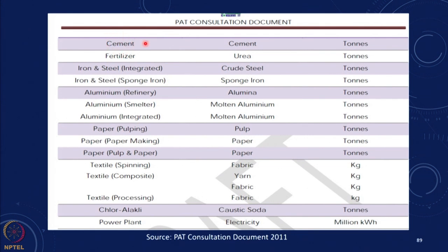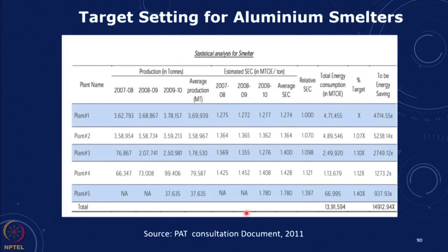In the case of cement, the output was put in terms of tons of cement; fertilizer was developed in terms of tons of urea. So the energy used per ton of urea, energy used per ton of cement, energy used per ton of crude steel, sponge iron, alumina, molten aluminium, pulp, paper, fabric, yarn, caustic soda — you can look at the document for further details.